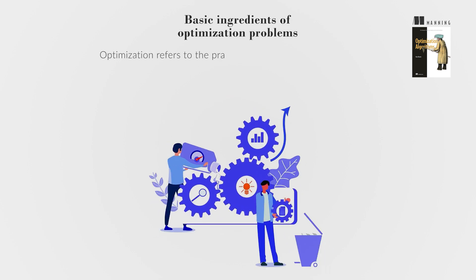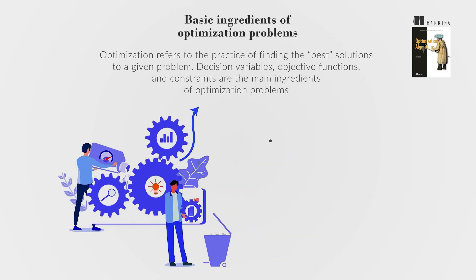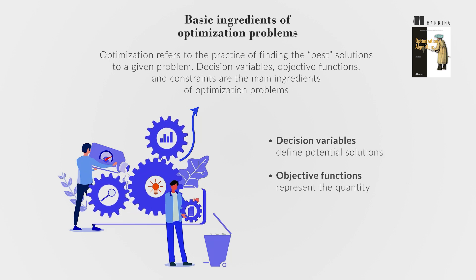Optimization refers to the practice of finding the best solutions to a given problem. Decision variables, objective functions, and constraints are the main ingredients of optimization problems. Decision variables define potential solutions, objective functions represent the quantity to be optimized, and constraints limit the solution space.